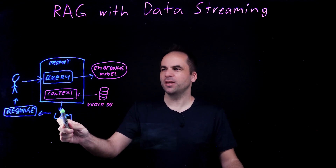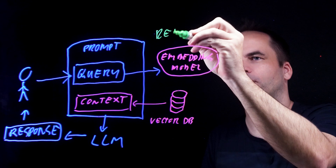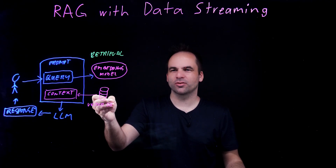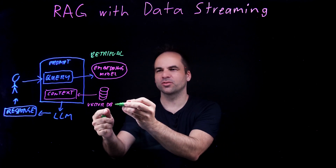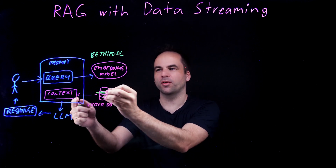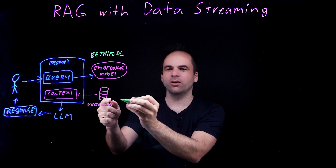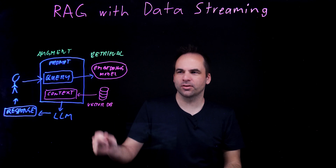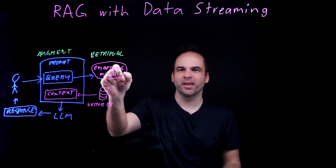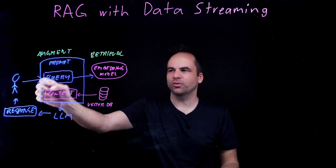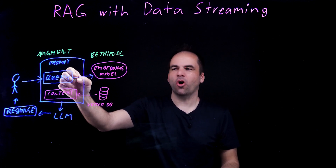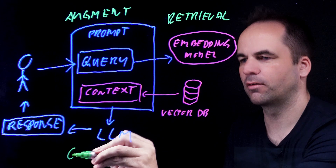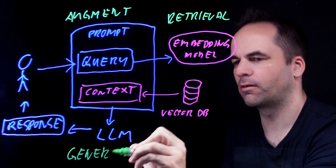Let's explore the key patterns you need for a RAG. First, there is the retrieval — consuming data from a data store. Very often, you use a vector database to store all the information where you need the context from. However, this is not really good enough. What you need is augmentation of that information: you take the information from the vector database and combine it with other information so that you can provide the right context for the query. Then you feed this into a large language model and generate the right answer.